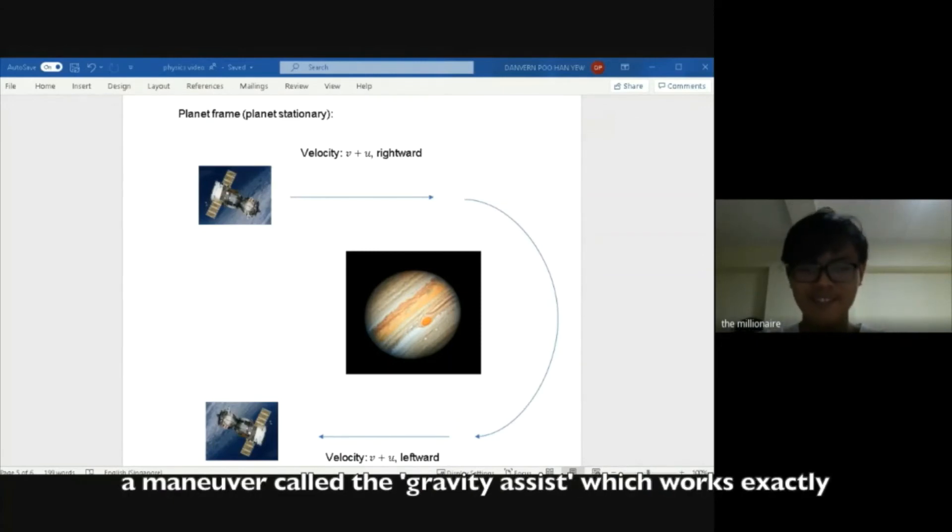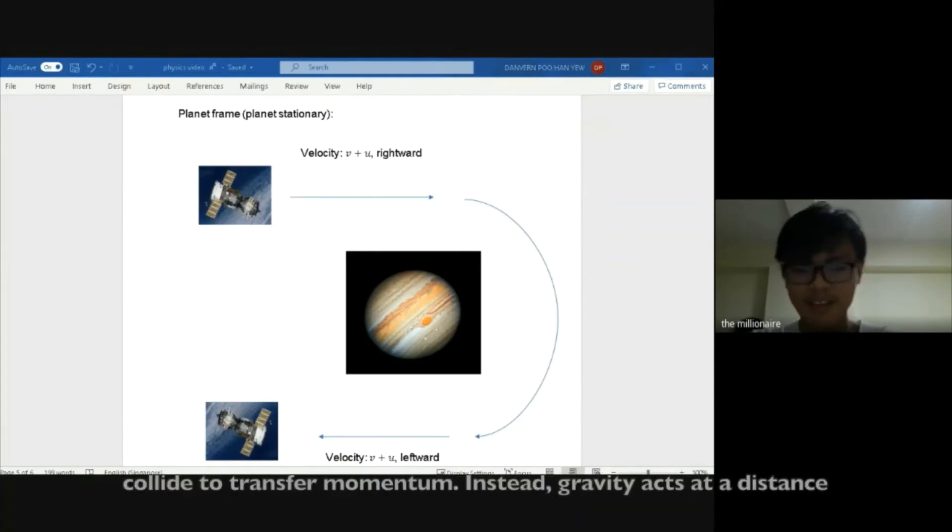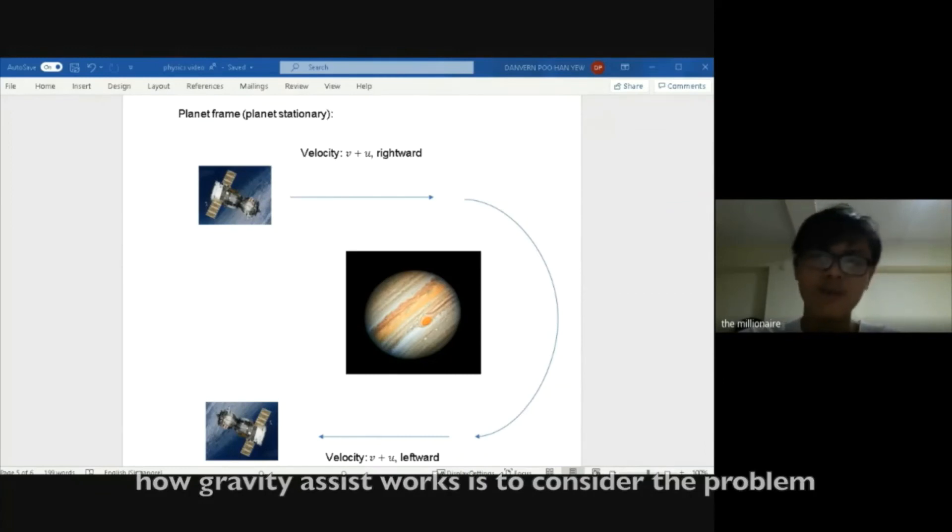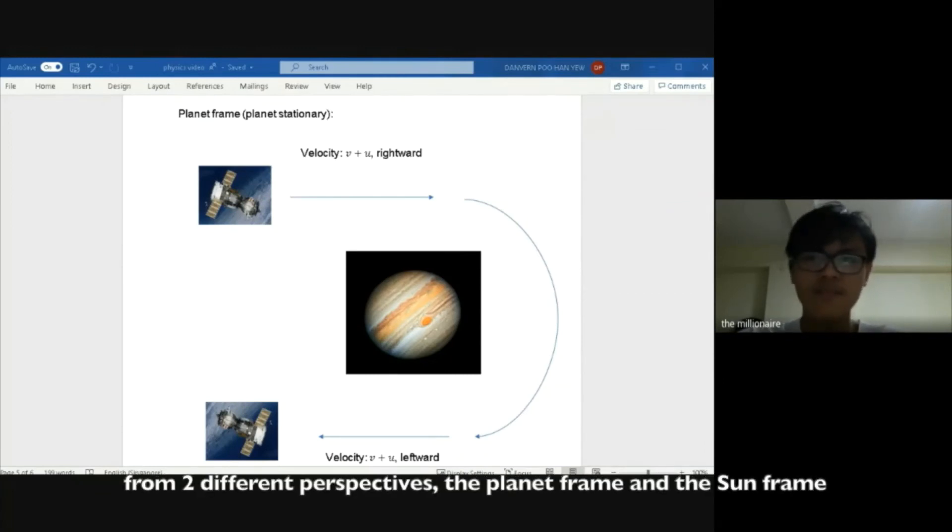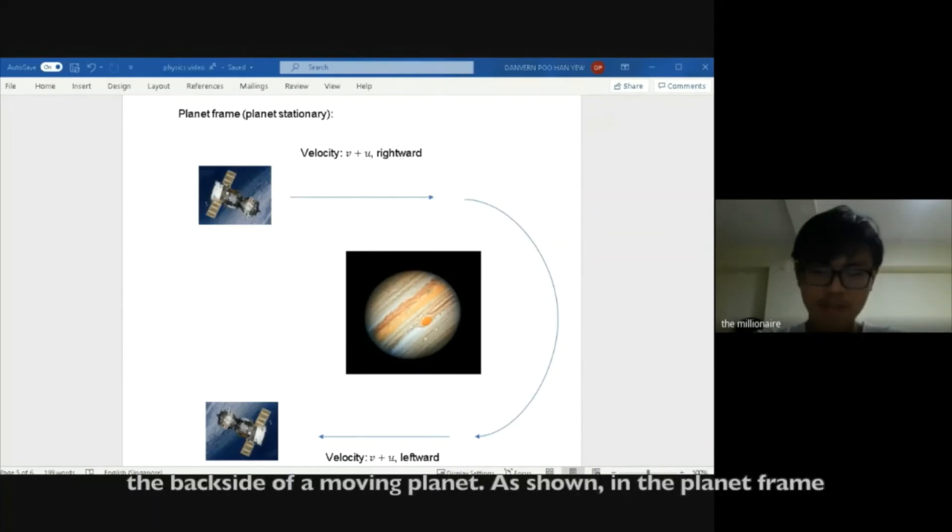How they accelerate is by using a maneuver called the gravity assist, which works exactly like what was shown in the video earlier, except they do not collide to transfer momentum. Instead gravity acts at a distance in order to transmit the force. The key to understanding how gravity assist works is to consider the problem from two different perspectives: the planet frame and the sun frame.